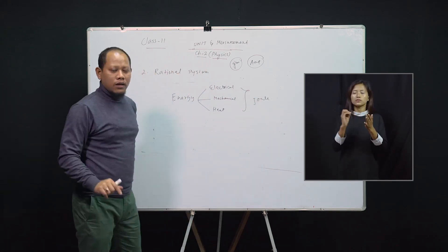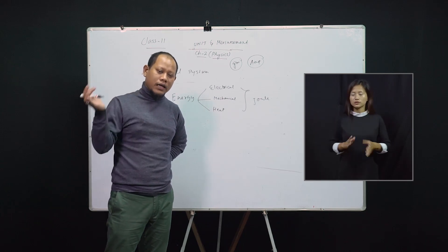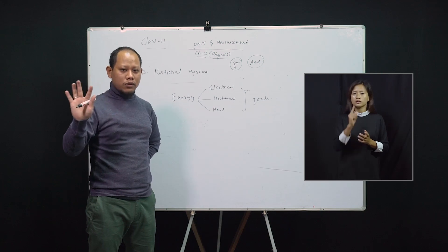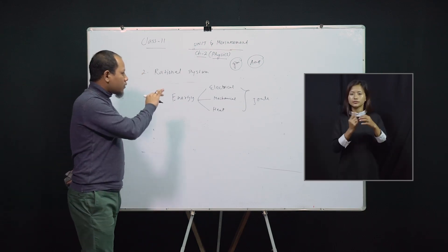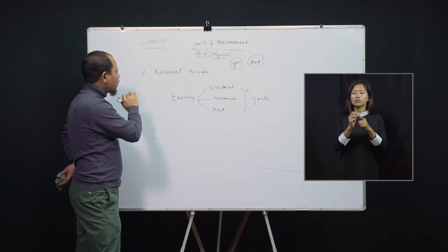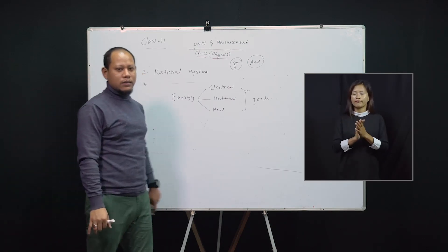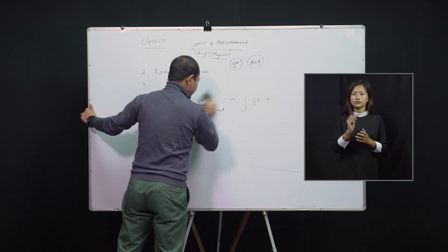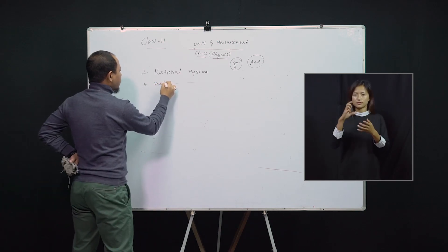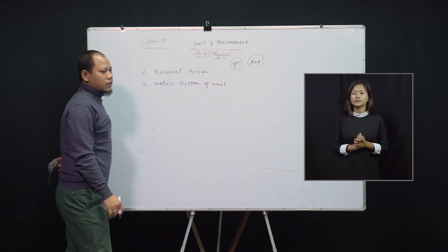So the meaning of rational is: even when physical quantities have different names but express the same logical meaning, we use only one unit. Many physical quantities of the same kind, but only one unit — that is the advantage. The next advantage of SI is that it is a metric system of units.